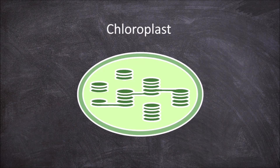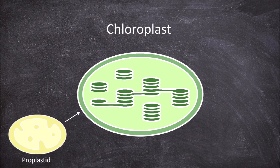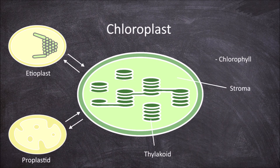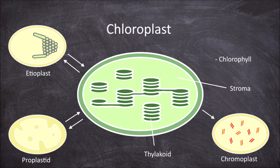The next plastid is the most familiar one, the chloroplast. Chloroplasts are formed from proplastids when developing in the presence of light, and also from etioplasts after the plant is exposed to light after being in the dark. Both of these processes are reversible. They have chlorophyll as well as the thylakoid and stroma structure within. Chloroplasts can be converted into chromoplasts, which occurs in ripening fruit and in leaves in autumn. This process is sometimes reversible.